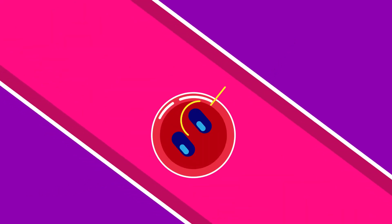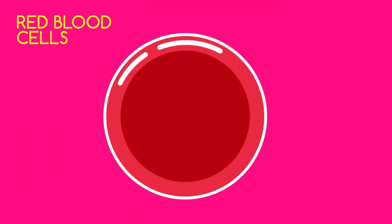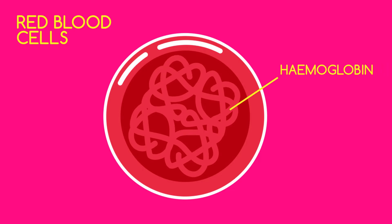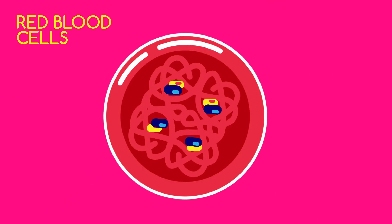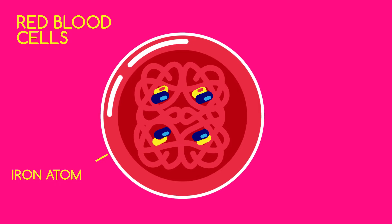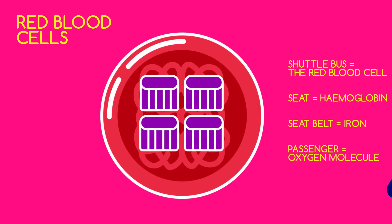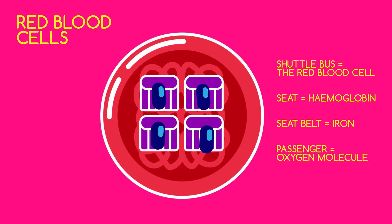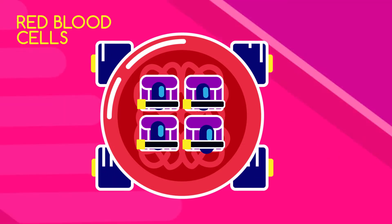A main function of blood is to transport oxygen to cells in your body. This role is carried out by red blood cells, which contain an important protein called haemoglobin. When we breathe in, oxygen latches onto an active site on the haemoglobin in the red blood cells that contains a single iron atom. We can think of it like a seat on a shuttle bus — the oxygen molecules must first find their seat and put their seatbelts on before the bus can move.